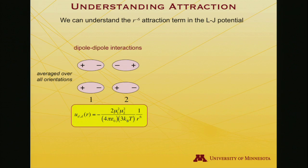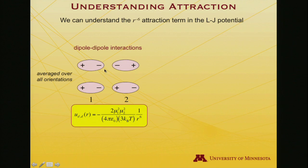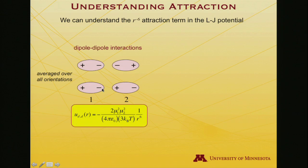If we ask what sort of physical interactions diminish as R to the minus 6 as things grow further apart, the first is dipole-dipole interactions. If our molecule has a permanent dipole moment, then there are two extreme possibilities for alignment. One is that the two dipoles are opposed to one another — a dipole represented by a negative charge and a positive charge. Since like charges repel, this would be a bad arrangement. On the other hand, they can also be head to tail, which is the maximally attractive arrangement. It turns out that dipole-dipole interactions between molecules are really quite small compared to thermal energy for typical molecules and temperatures.